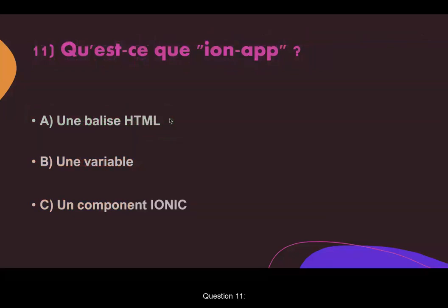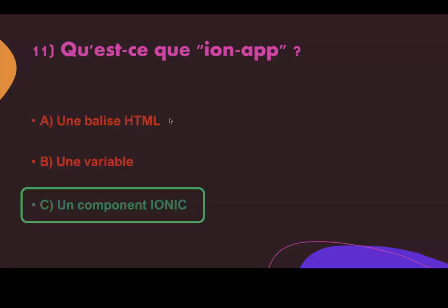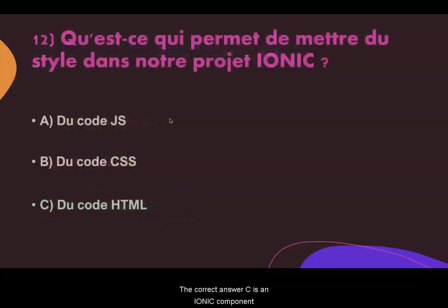Question eleven. What is ion-app? Question twelve: what allows us to put style in our Ionic project? Answer A: an HTML tag. Answer B: a variable. Answer C: an Ionic component. The correct answer is C, an Ionic component.